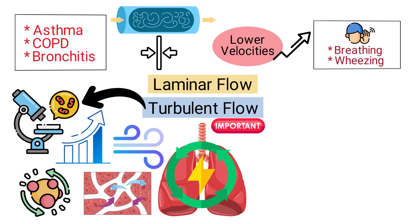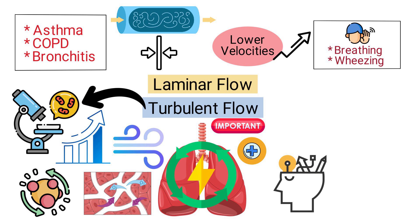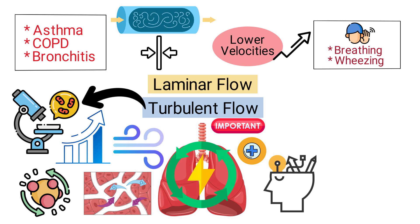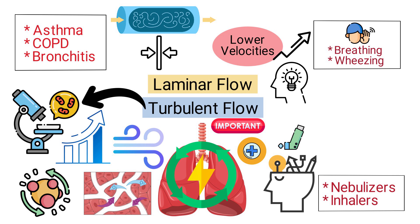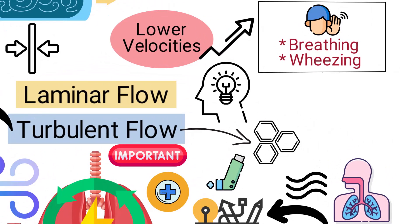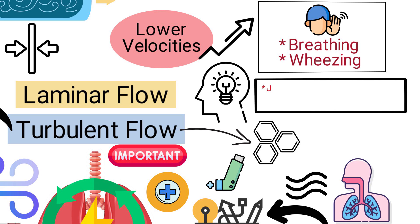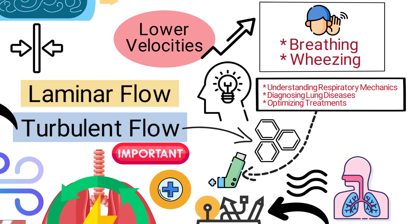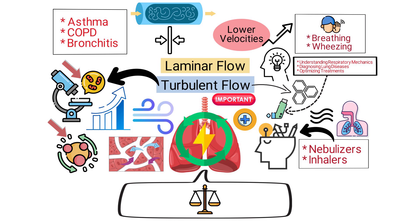The relevance of turbulent flow in the lungs extends to clinical applications and medical device designs as well. For instance, understanding the dynamics of turbulent flow helps in the effective delivery of inhaled medications. Nebulizers and inhalers are designed to optimize the deposition of medication in various parts of the respiratory tract, considering the flow patterns. Turbulent flow in the respiratory system is a dynamic phenomenon that can indicate both physiological responses to increased demand and pathological changes in respiratory conditions. Its study is vital for understanding respiratory mechanics, diagnosing lung diseases, and optimizing treatments that involve airflow such as inhaled medications. The intricate balance between laminar and turbulent flow within the lungs is a testament to the complexity and efficiency of the human respiratory system.